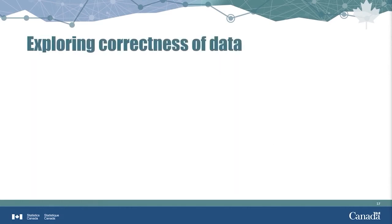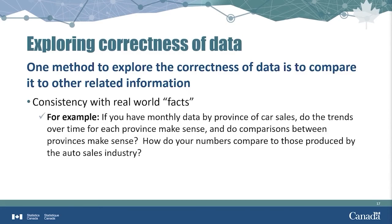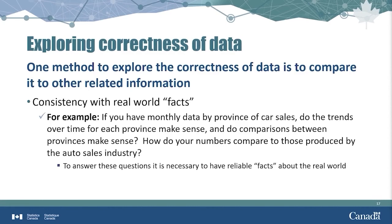Yet another way to explore correctness is to compare what's in the data with what's happening in the real world. You could calculate summary statistics, such as totals and averages for car sales across Canada, and compare across provinces or through time. Do the numbers make sense? Does the auto industry track these numbers, and how do your numbers compare to theirs?